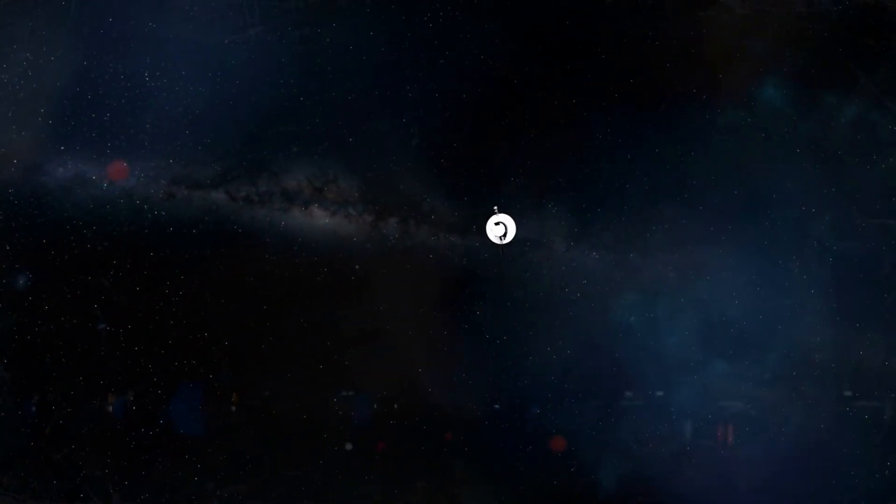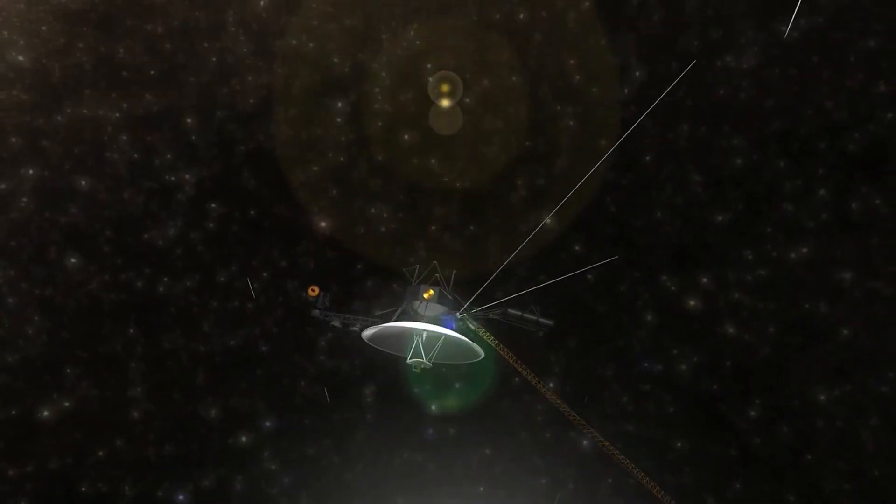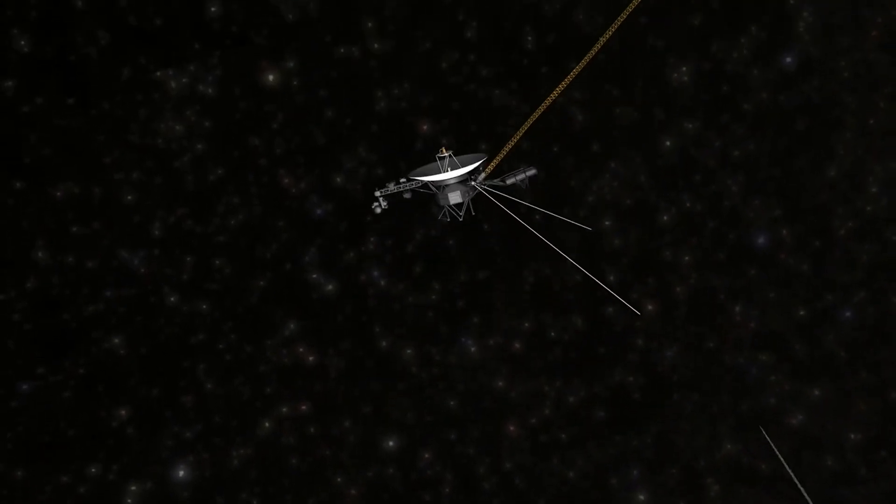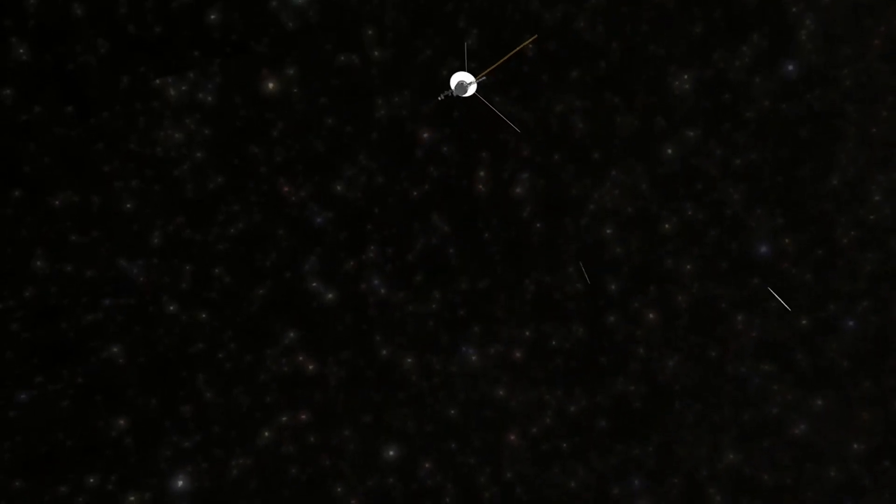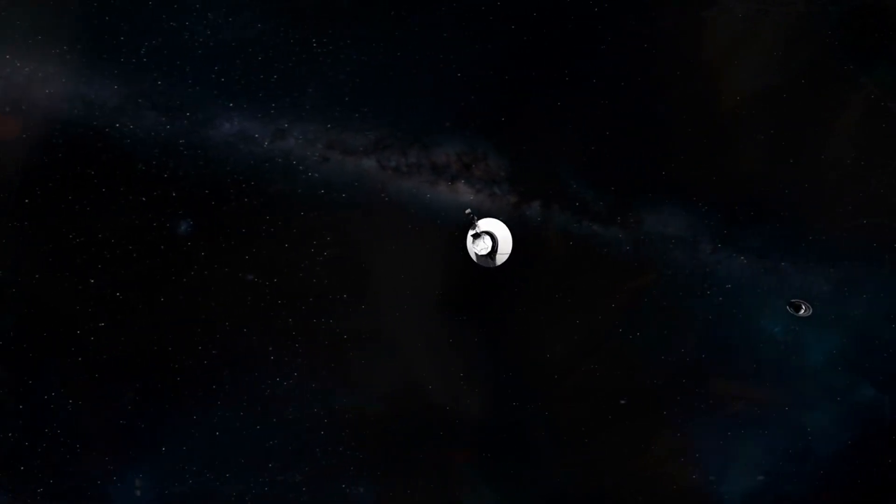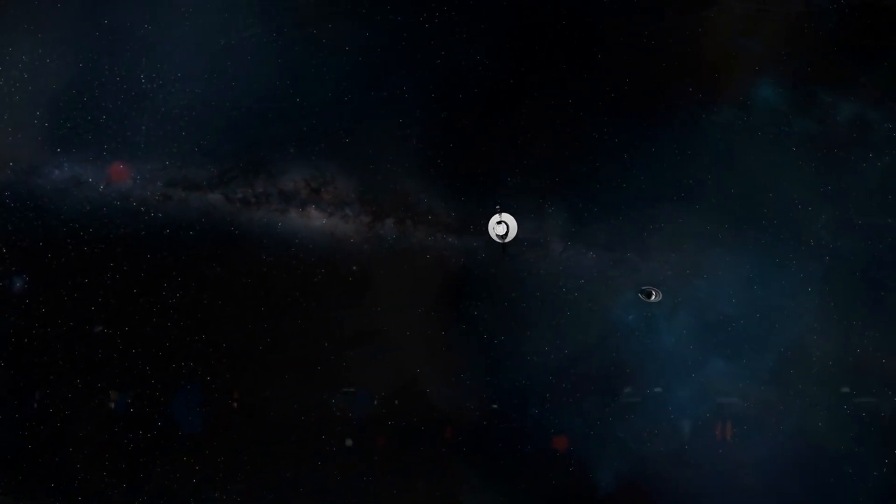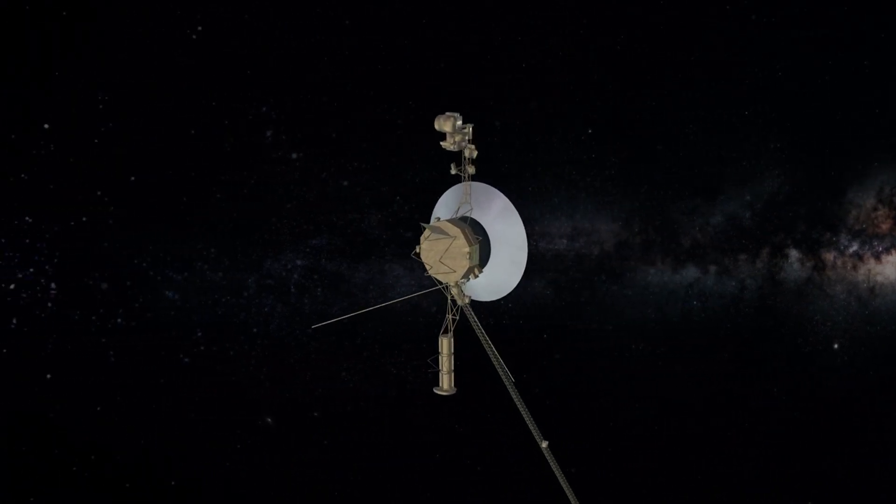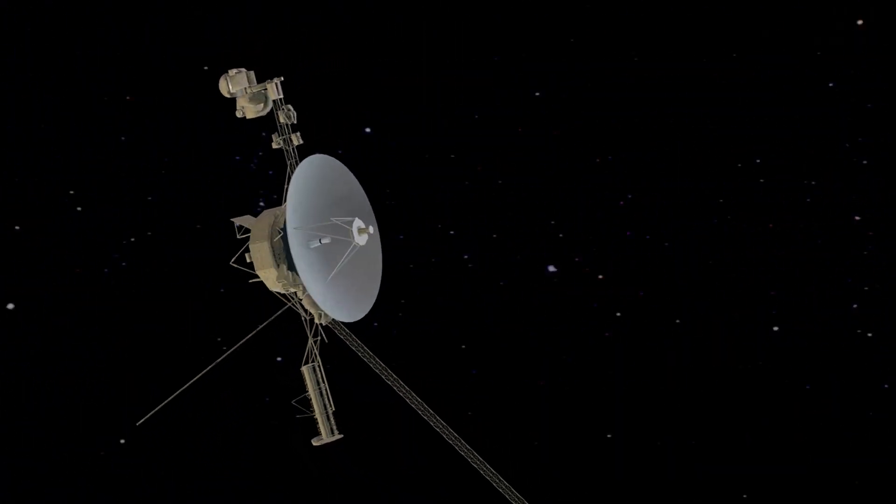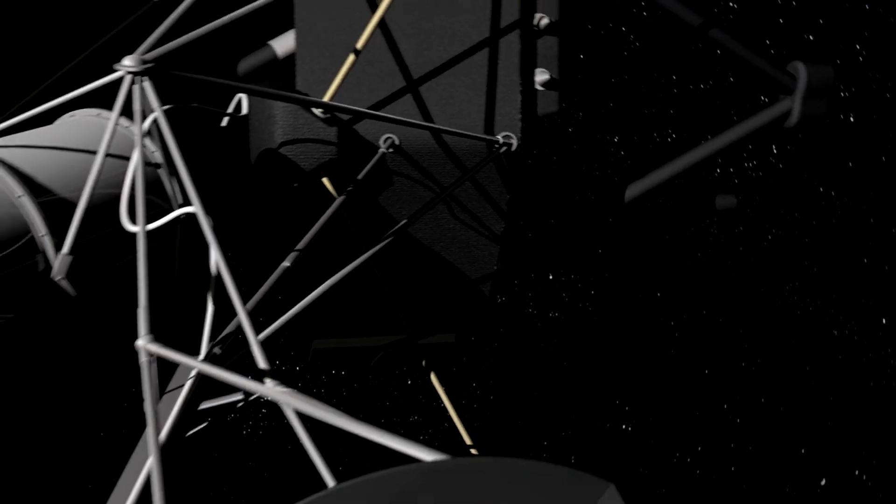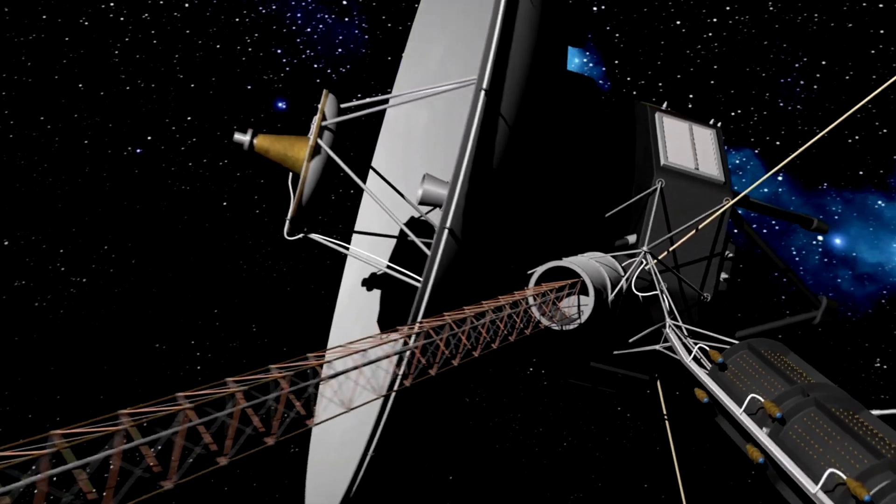Voyager's passage through the heliopause was not just a triumph of engineering, but a moment of poetic significance. It's the first time a human-made object left the Sun's protective cocoon and entered the galaxy at large. The Wall of Fire, though dramatic in name, was not a wall in the traditional sense, nor was it a blaze in flames. It was a region of invisible heat and cosmic turbulence, a final veil through which the spacecraft had to pass to become an interstellar traveler.